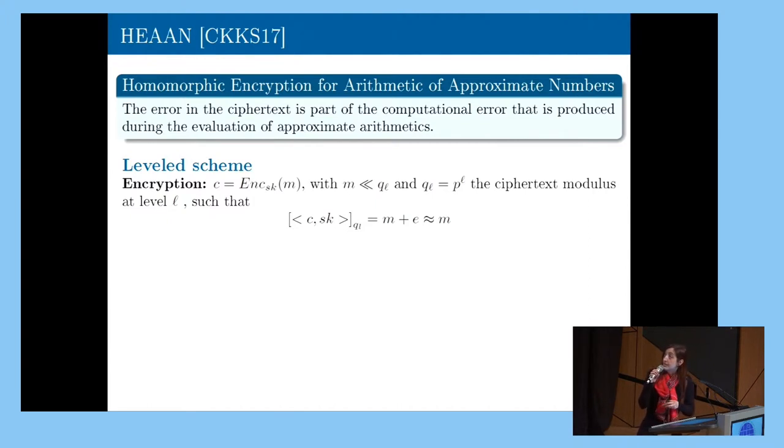The ciphertext at level L is expressed with respect to a ciphertext modulus q_L. The message encrypted is very small with respect to this modulus. What is important to know is that the decryption is just an inner product between the ciphertext and the secret key, then reduced modulo this ciphertext modulo.